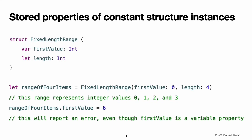Stored properties of constant structure instances: if you create an instance of a structure and assign that instance to a constant, you cannot modify the instance properties, even if they were declared as variable properties. Because rangeOfFourItems is declared as a constant with the let keyword, it is not possible to change its firstValue property, even though firstValue is a variable property. This behavior is due to structures being value types — when an instance of a value type is marked as a constant, so are all of its properties.